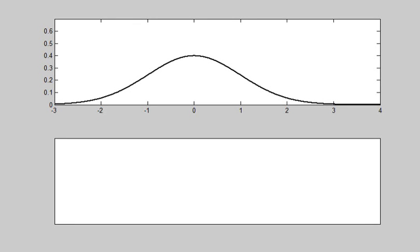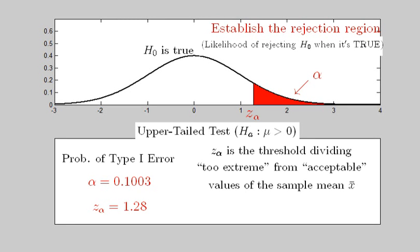Begin with the sampling distribution assuming that the null hypothesis, or status quo, is true. The researcher establishes a rejection region by choosing a significance level, alpha, which is shown in red to represent the probability of making a Type 1 error.